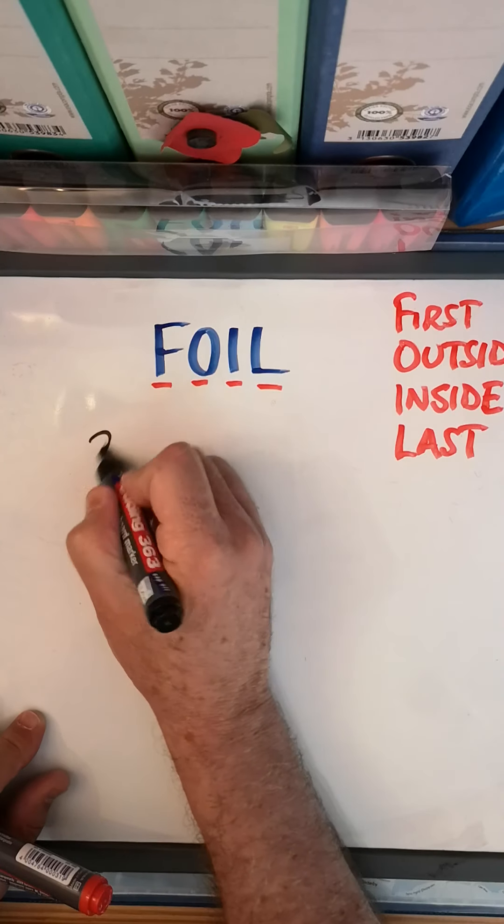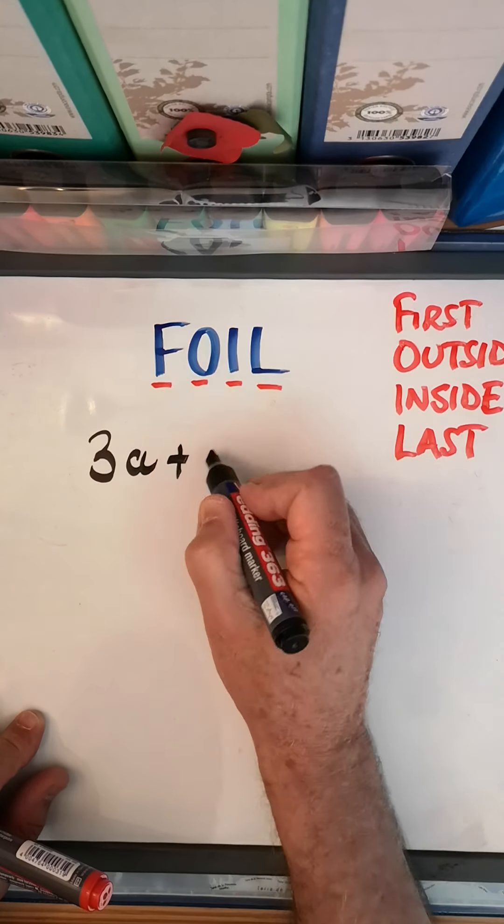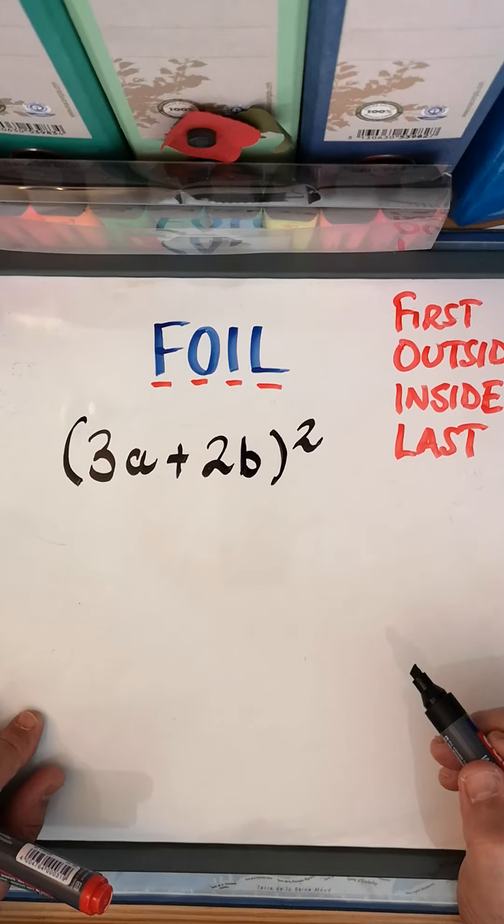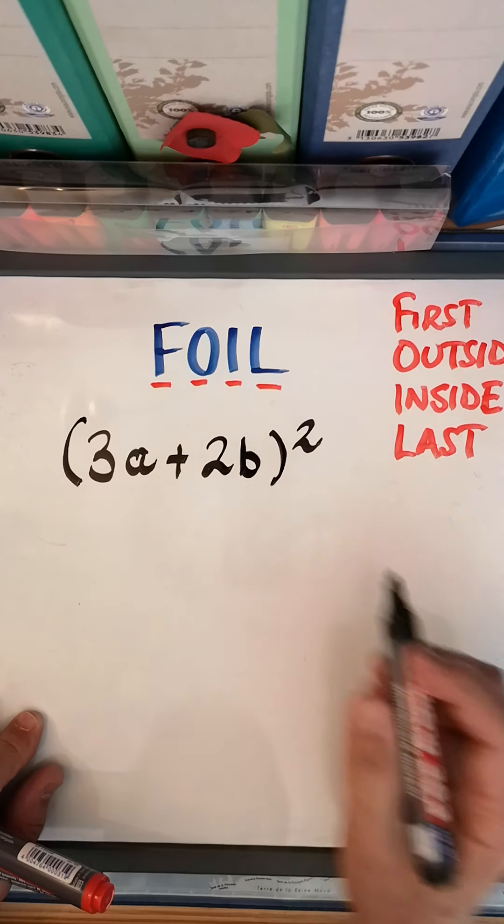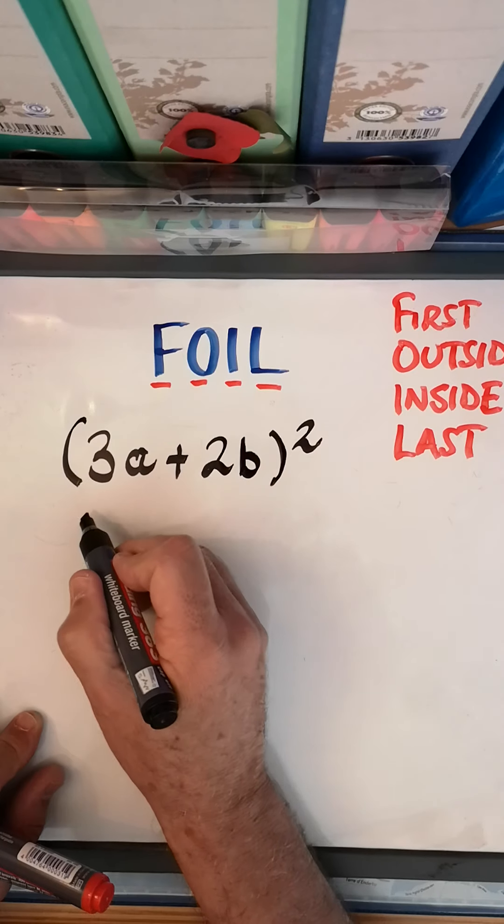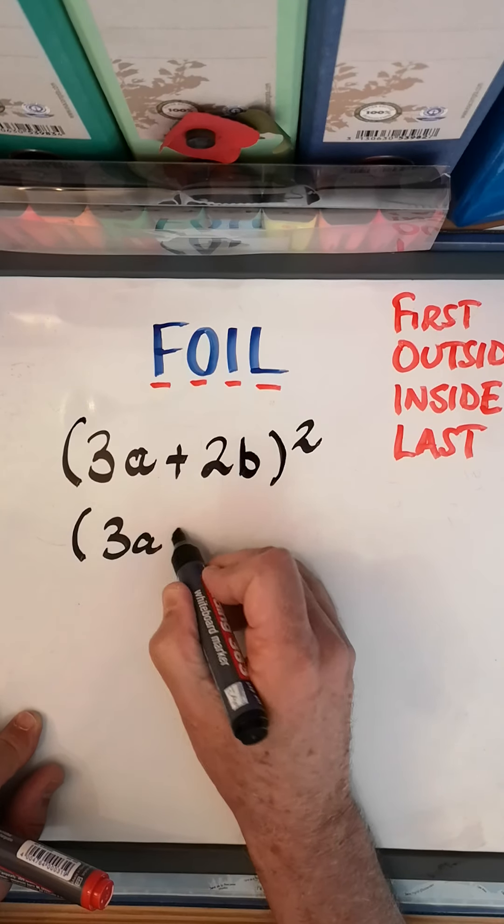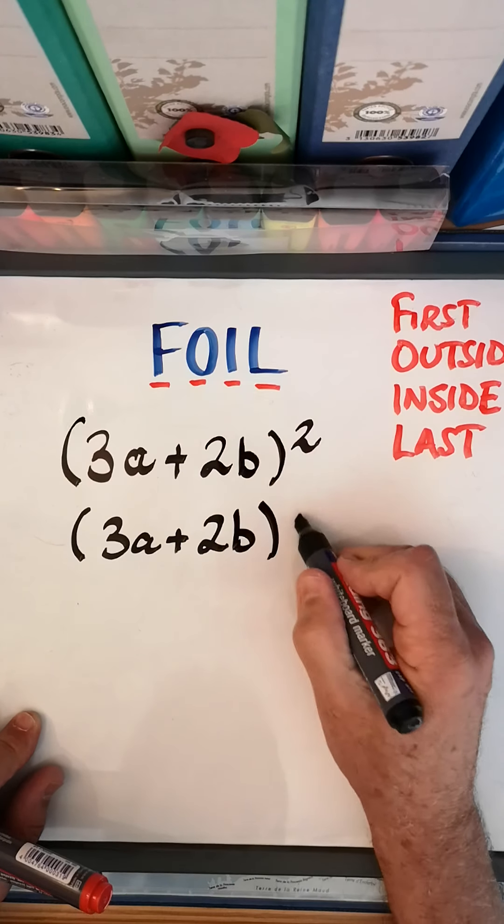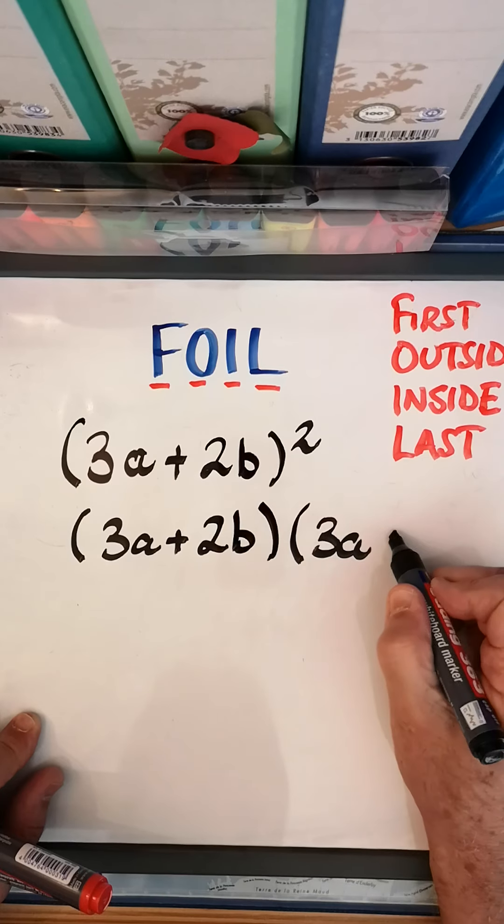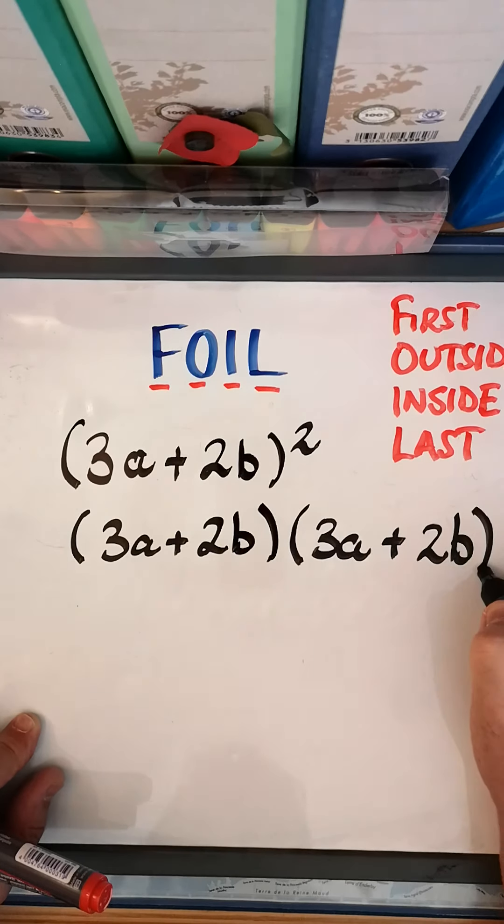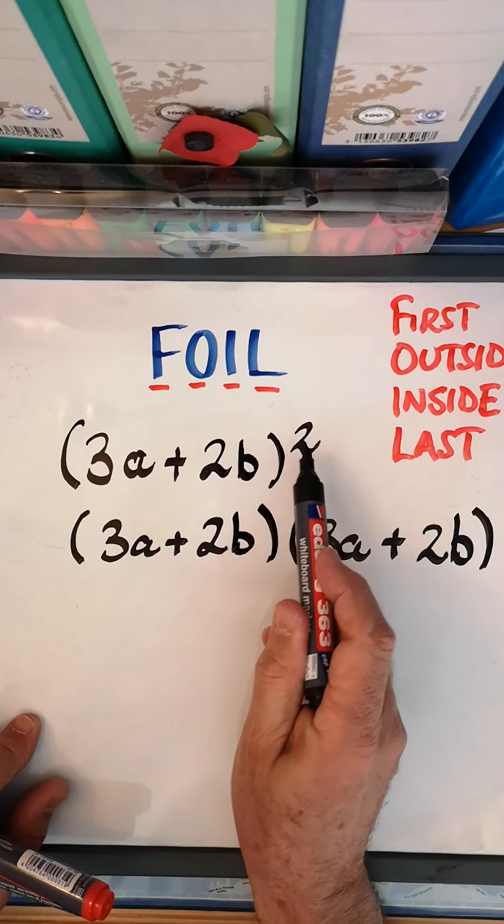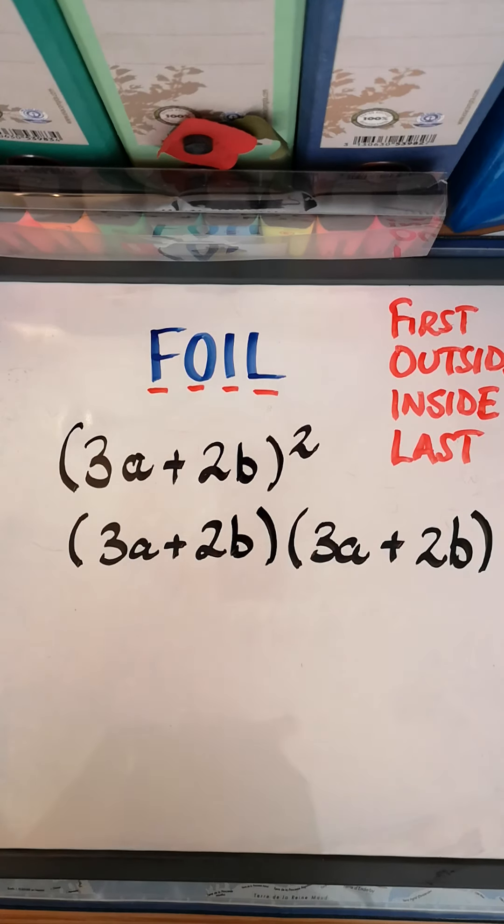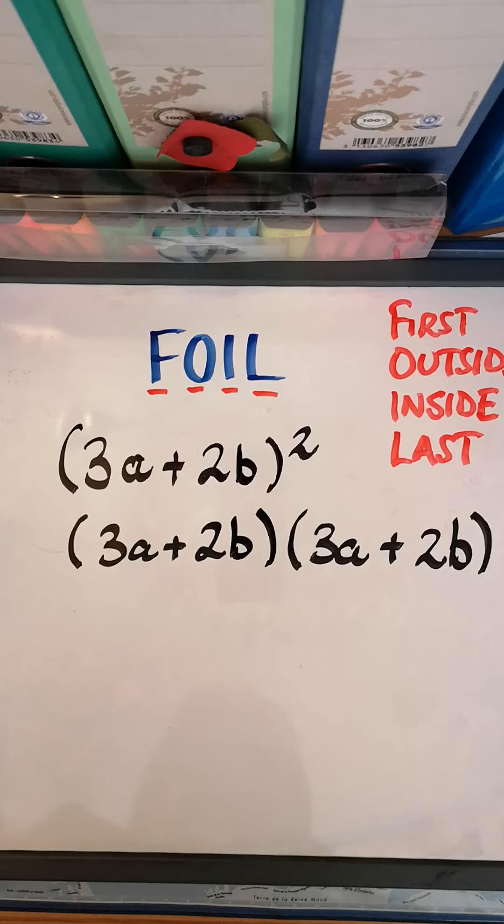Where does this come in handy? It comes in handy when you have a sum like this. Let's take (3a+2b)². What should we do first? Let's write it out again: (3a+2b). Because it's squared, we open up another bracket. Remember, squared means take whatever's in that bracket and do it twice.